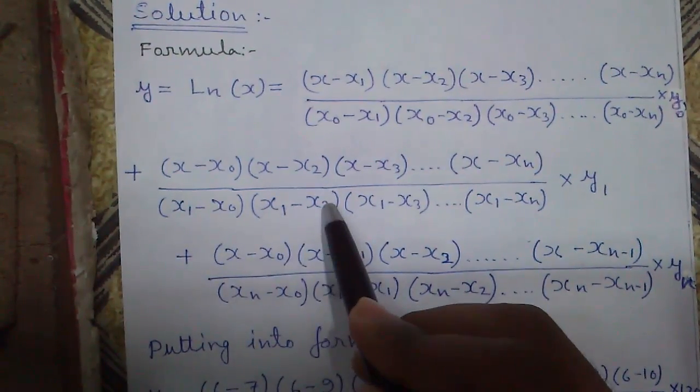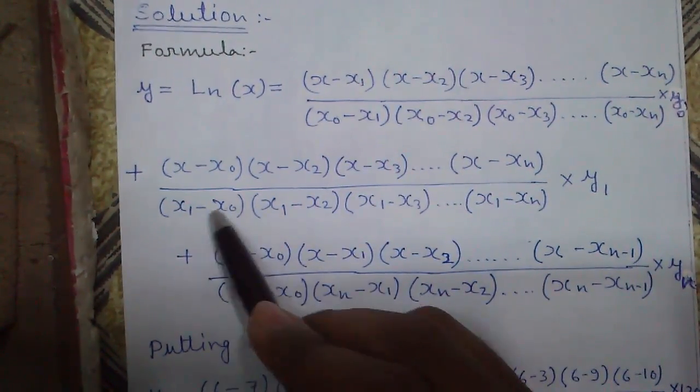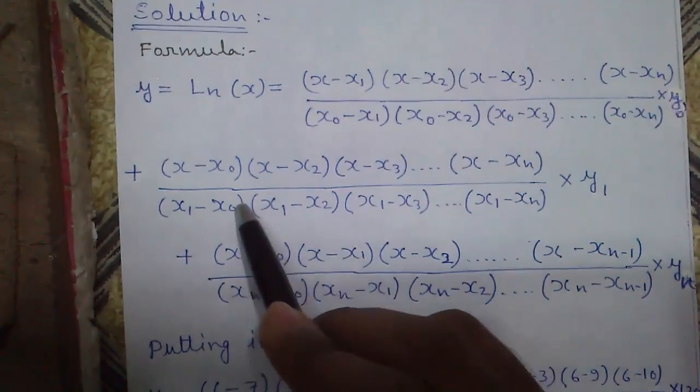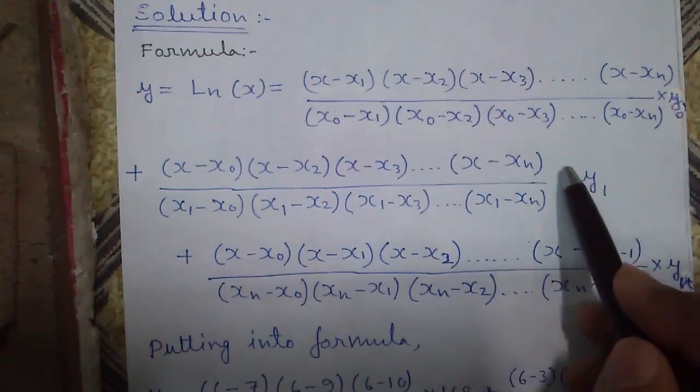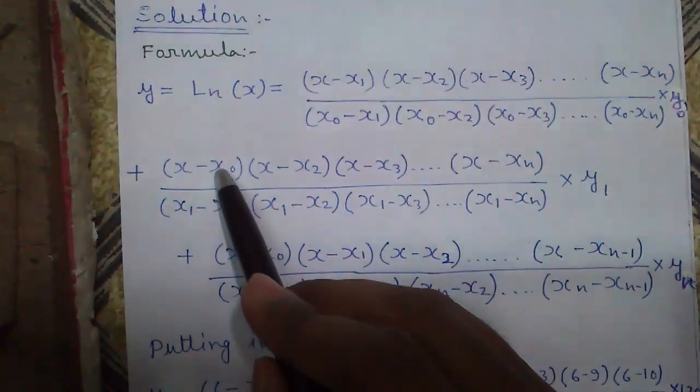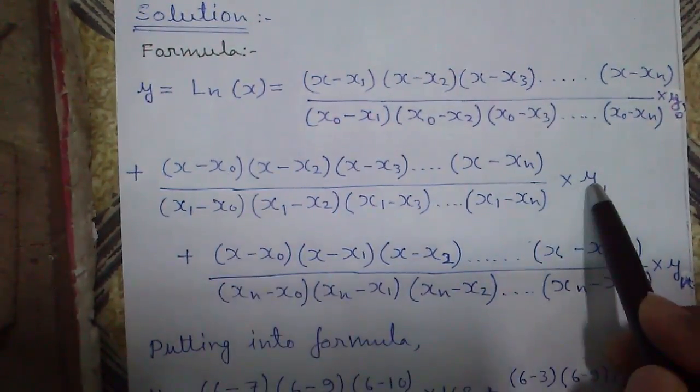Everything will be subtracted from x1 in the denominator, so x1 minus x0, x1 minus x2, again x1 is missing, x1 minus x0 then x2, x1 is missing, x1 minus x3, x4 and so on. The last term will be x1 minus xn times y1. x1 is missing so we multiply with y1.